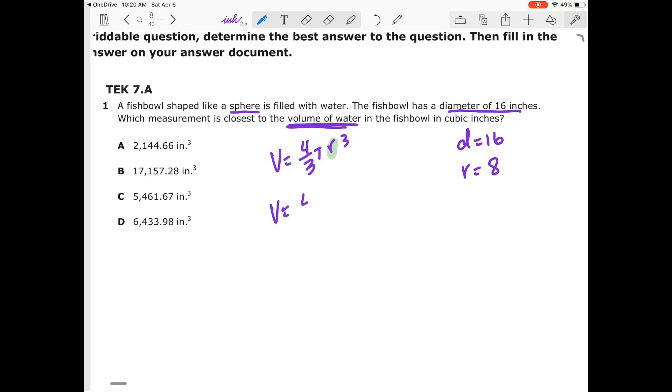Then I am quite simply plugging that in. So that becomes four-thirds pi times 8 to the third power. 8 to the third power, let me look at my calculator. 8 times 8 times 8 will give me 512. So volume is equal to four-thirds pi times 512.